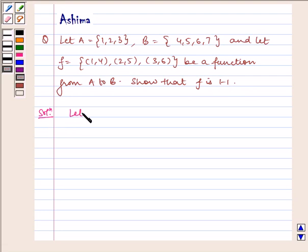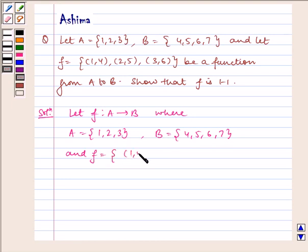Let F be a function from A to B where A equals 1, 2, 3 and B equals 4, 5, 6, 7, and F equals (1,4), (2,5), (3,6).